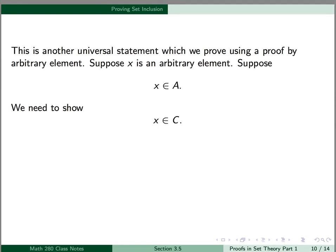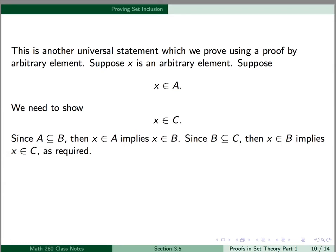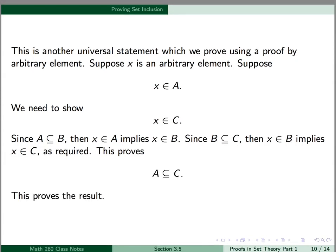This is now a universal statement, so we're going to use a proof by arbitrary element to prove it. We suppose x is an arbitrary element, suppose x is an element of A, and we need to show x is an element of C. According to our hypotheses, our first hypothesis says A is a subset of B, so since A⊆B, then x is an element of A implies x is an element of B. Our second hypothesis tells us that B is a subset of C, so then x is an element of B implies x is an element of C. This is what we needed to show, so this proves our result, and we can conclude that A is a subset of C.